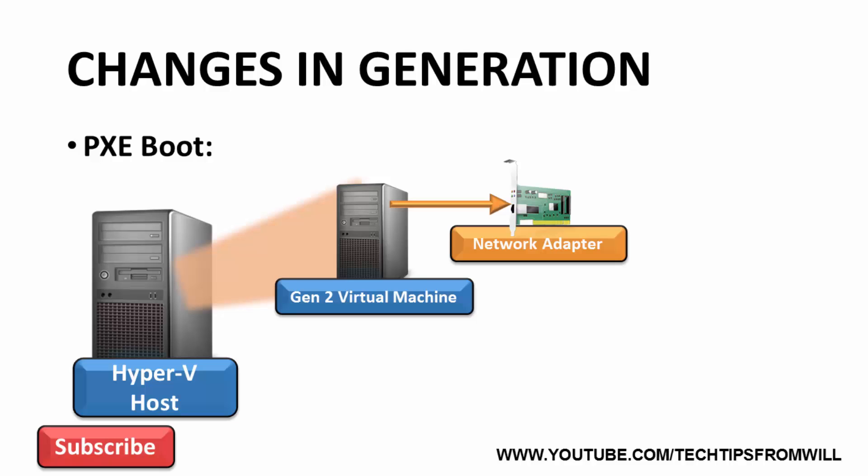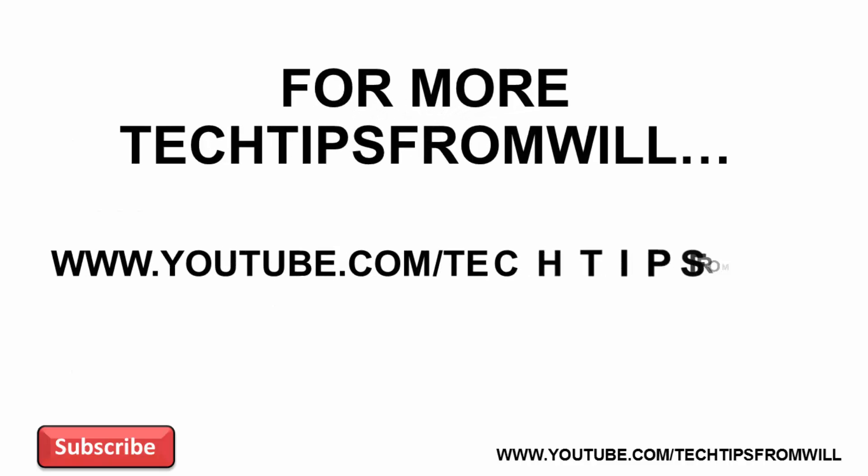This saves the administrator the trouble of having to attach a legacy network adapter to install the operating system and then detach it and replace it with a regular network adapter for networking. That covers all of the differences between Generation 1 and Generation 2 virtual machines in Windows Server 2012 R2 Hyper-V. I hope that you have enjoyed this video and found it informative.